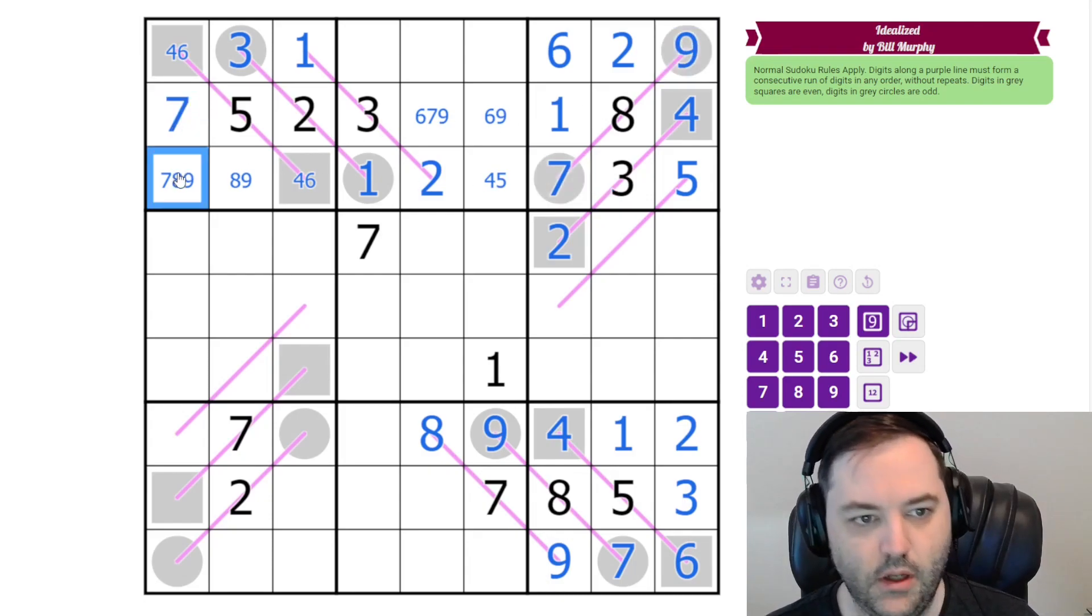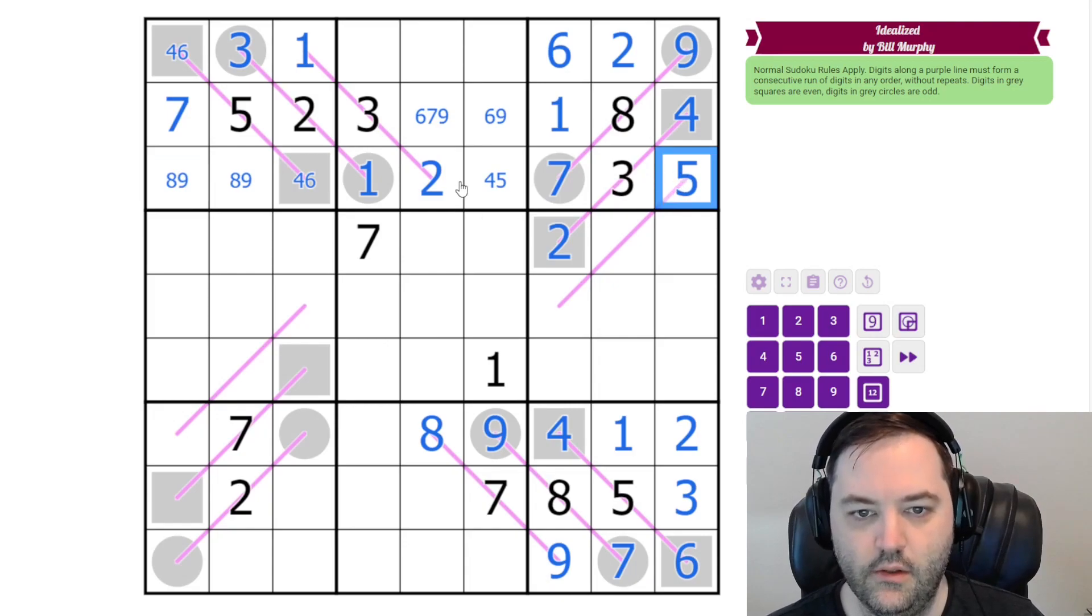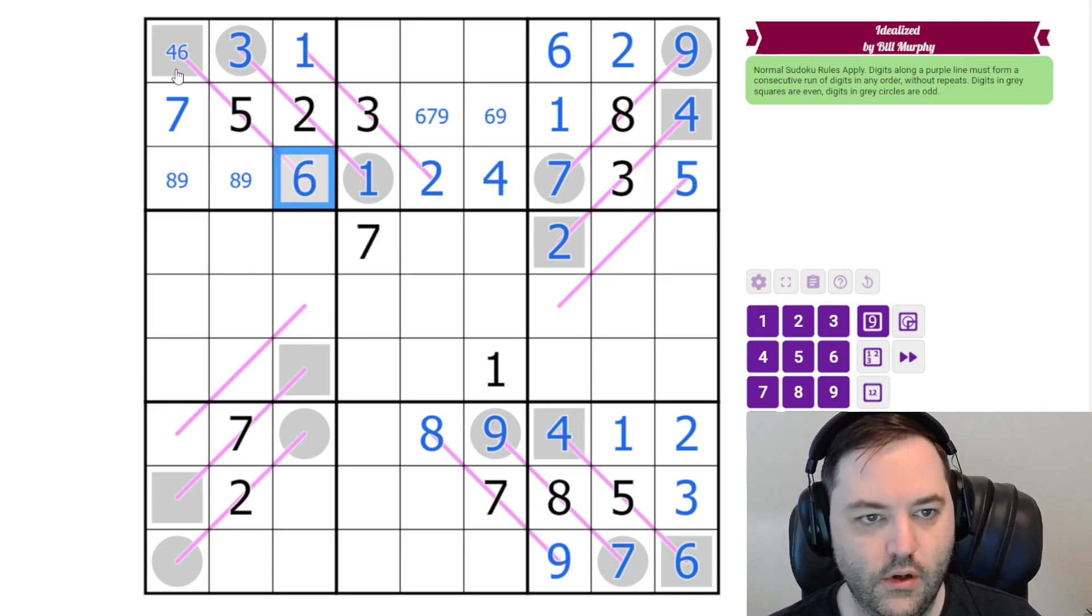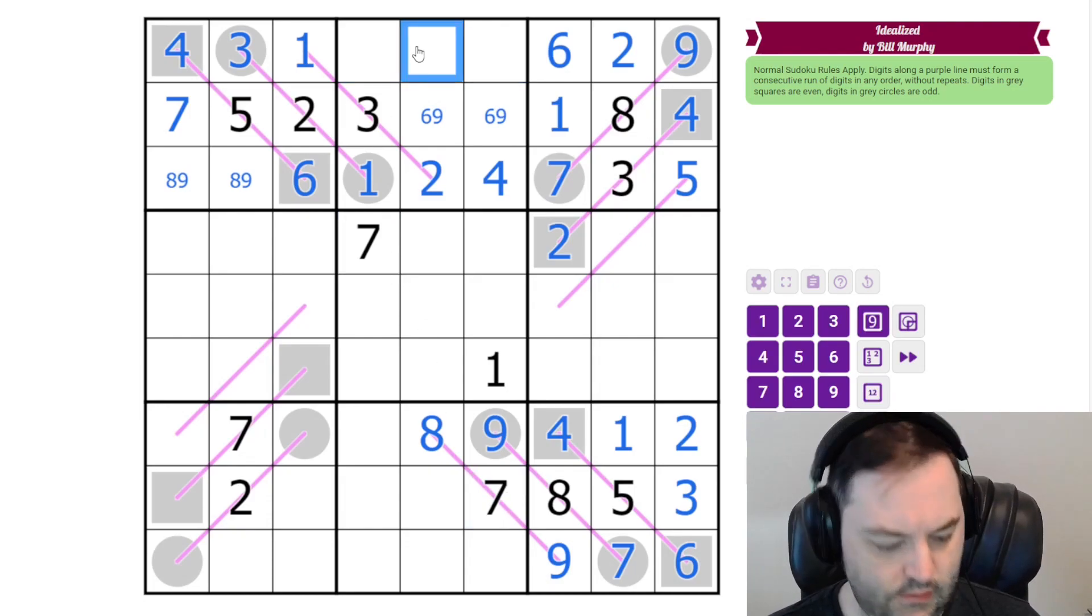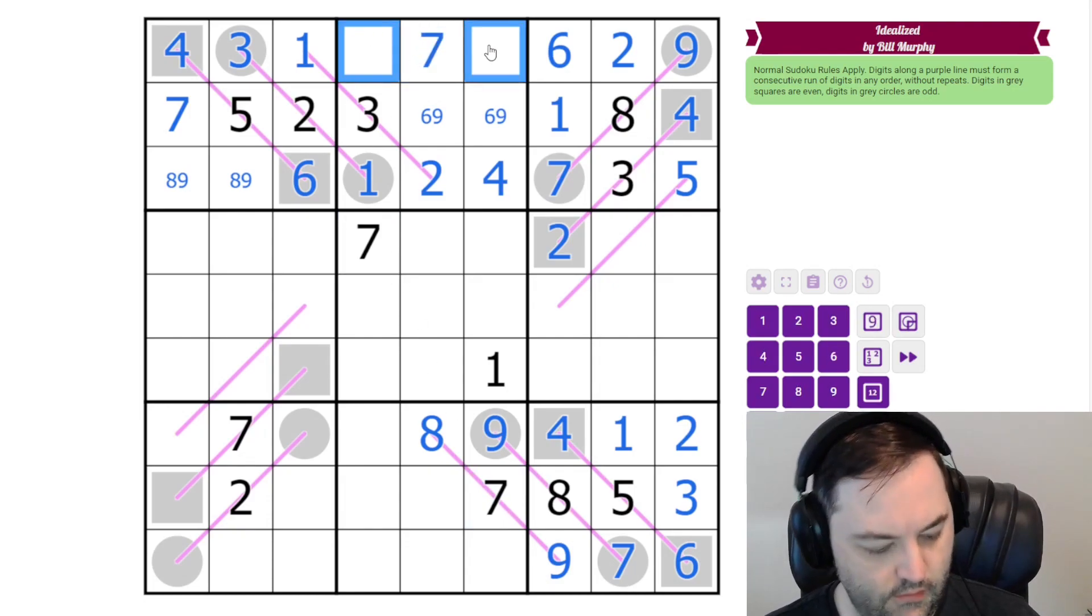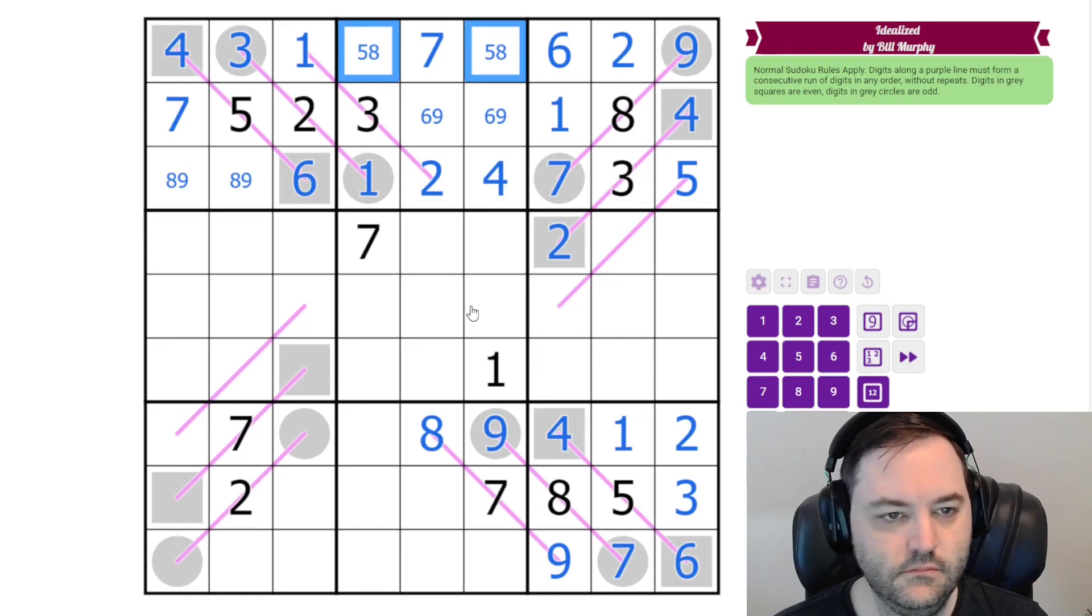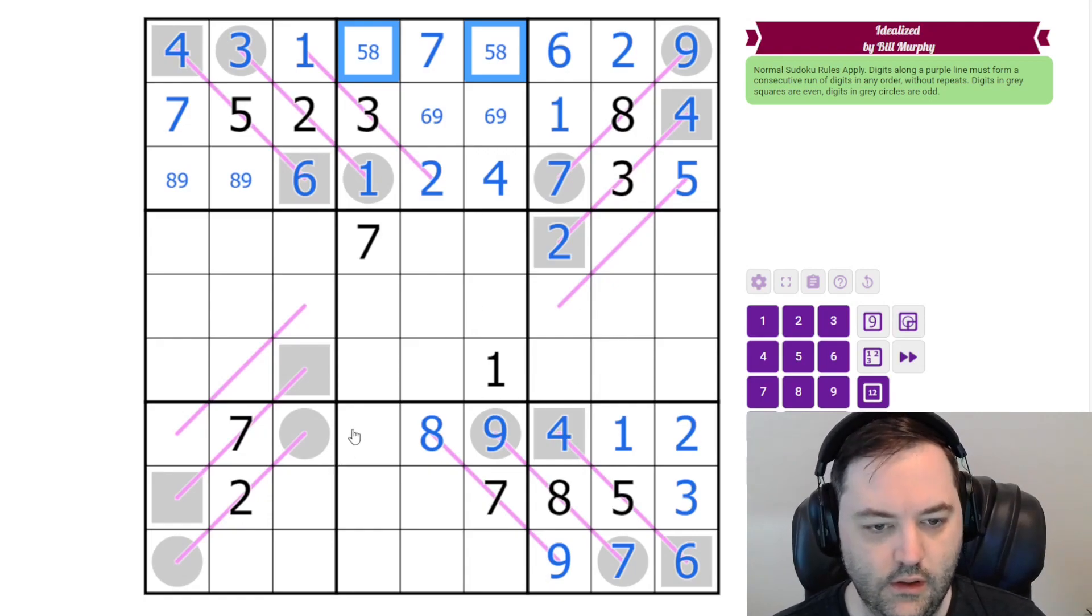Seven here places seven in box one. The five resolves our four and our six and our four. This is no longer seven and we are left with five, seven, and eight. We have two sevens here. This is going to be five. So that cleaned up a lot.